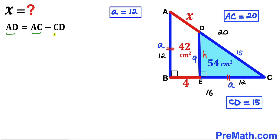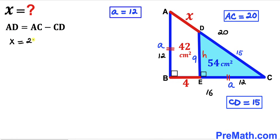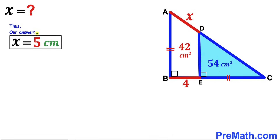For our final step: AD equals AC minus CD. Since AD is represented by x, we write x equals 20 minus 15. Therefore x equals 5 centimeters. After all the calculations, our final answer is x equals 5 centimeters. Thanks for watching and please don't forget to subscribe to my channel for more exciting videos.